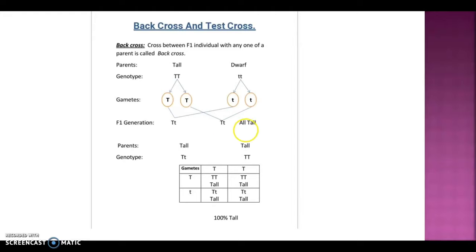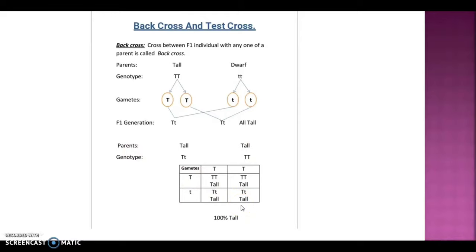In the back cross, the cross occurs between the F1 individual and one of the parents — particularly here with the dominant parent. So the parents are the F1 individual and the previous generation dominant parent. In this dominant back cross, all individuals become tall — meaning 100% tall individuals are produced in the next generation.